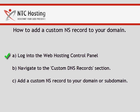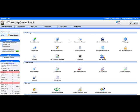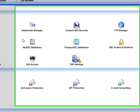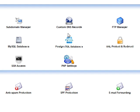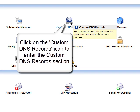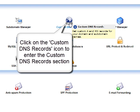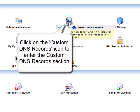Now you must go to the custom DNS records. Once you open your control panel index, you will find a shortcut to this section under Site Management. Now click the custom DNS records icon.